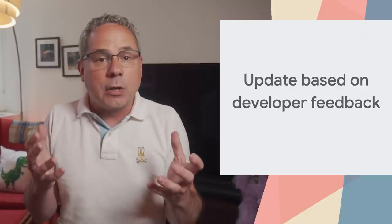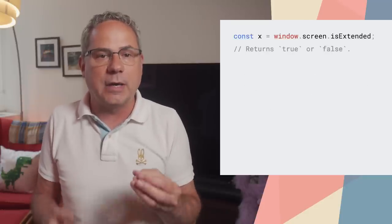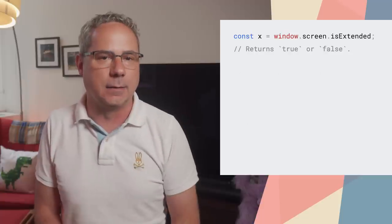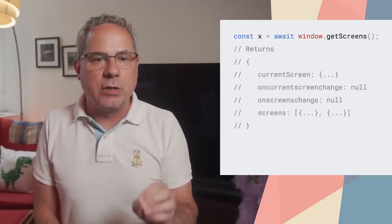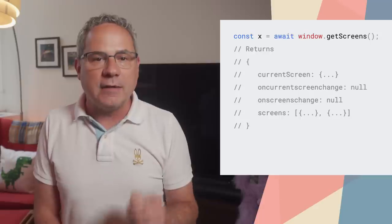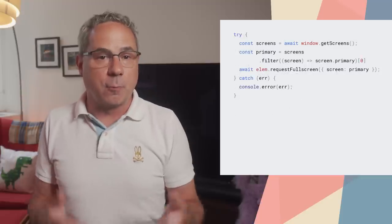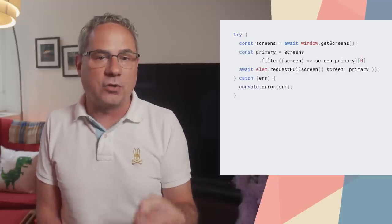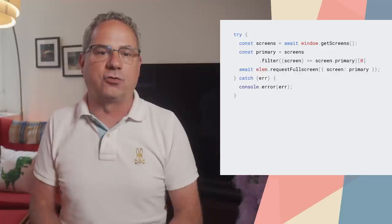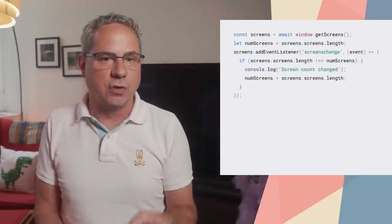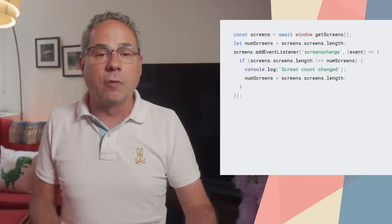This is its second origin trial, and we've made a number of changes based on your feedback. You can quickly check to see if there's more than one screen connected to the device with window.screen.isExtended. But the key functionality is in window.getScreens, which provides details about all the attached displays. For example, you can determine the primary screen, then use request.fullscreen to display an element on that screen. It also provides a way to listen for changes, for example if a new display is plugged in or removed.